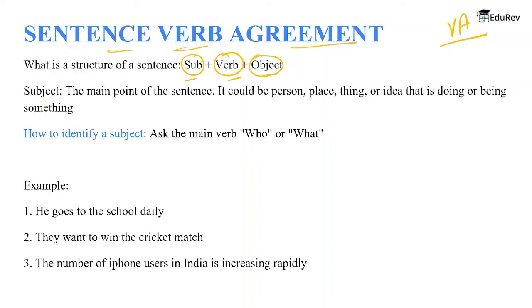The subject is the main point of the sentence — it could be a person, a place, a thing, or an idea that is doing or being something. How do you identify your subject? Ask the main verb 'who' or 'what.' For example: 'He goes to school daily.' Who goes to school daily? He does — so 'he' becomes our subject.